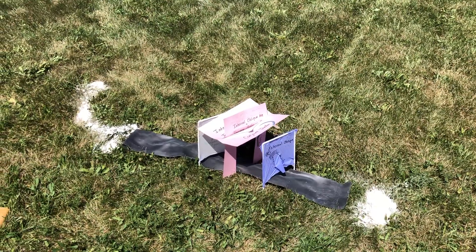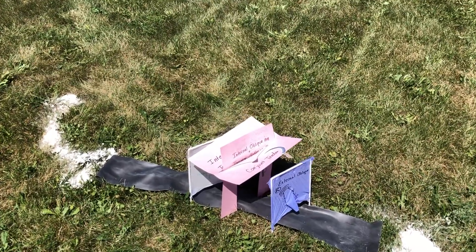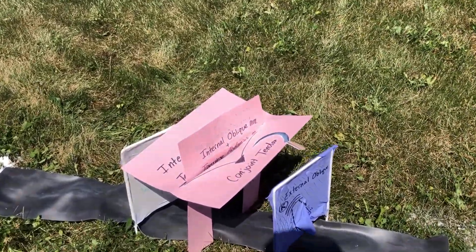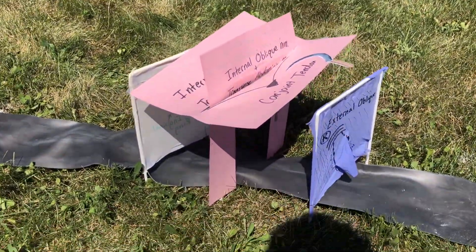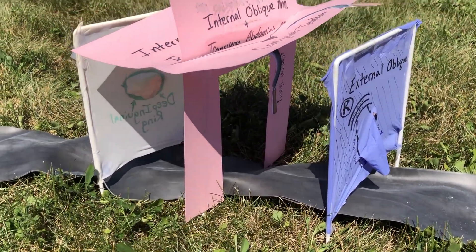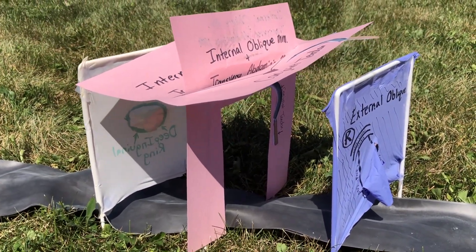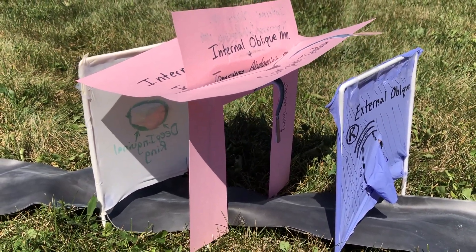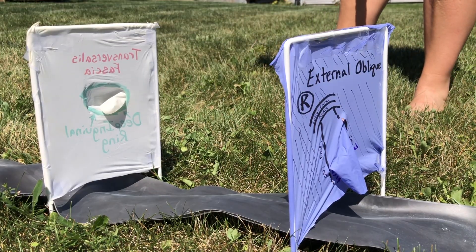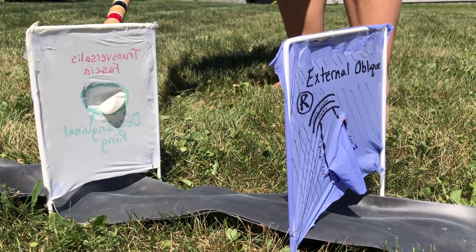The roof of the inguinal canal consists of the internal oblique and the transverse abdominis. They're joined together to make the conjoint tendon, or the inguinal falx.